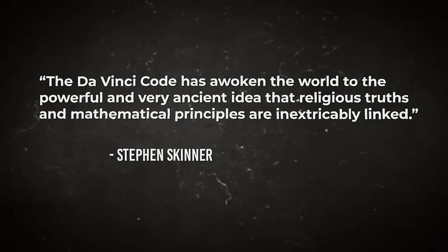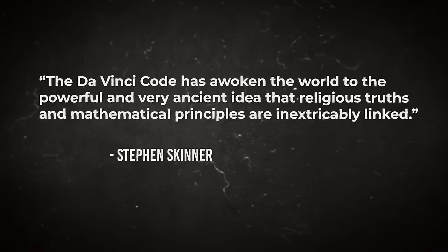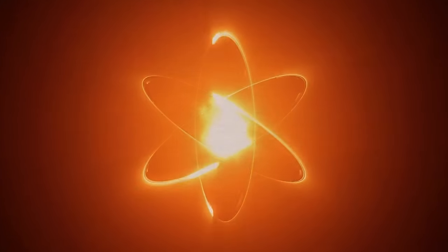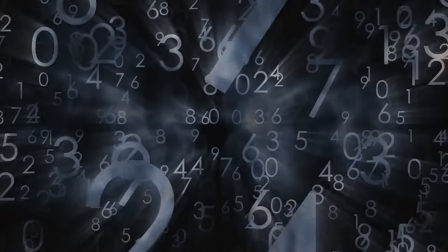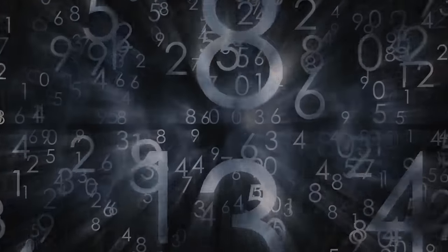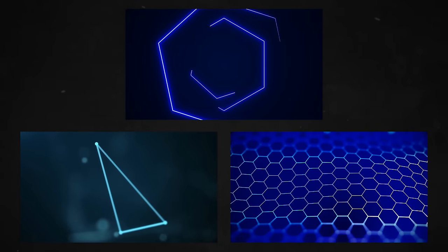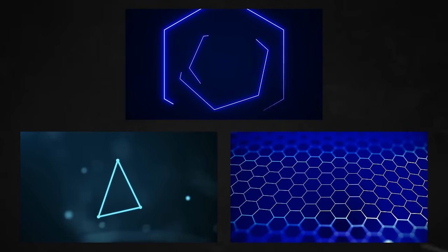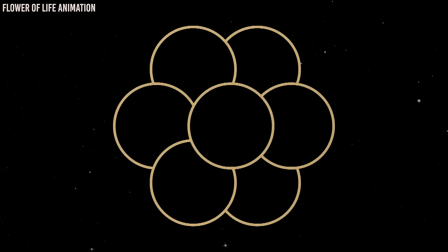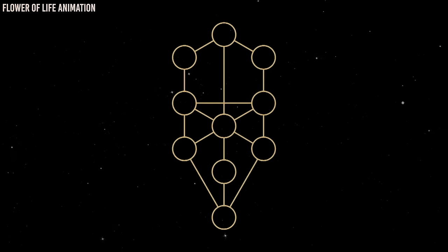Stephen Skinner, author of the book Sacred Geometry, writes: The Da Vinci Code has awoken the world to the powerful and very ancient idea that religious truths and mathematical principles are inextricably linked. Sacred geometry provides a simple approach to comprehending how that link is revealed in nature and the arts. Many ancient people felt that numbers had symbolic significance beyond their everyday utility. Various forms, including triangles, octagons, and hexagons, are believed to be physical manifestations of numbers. Sacred geometry has frequently influenced the design of sacred structures and sacred art.